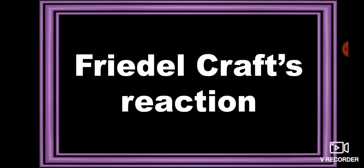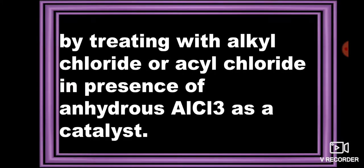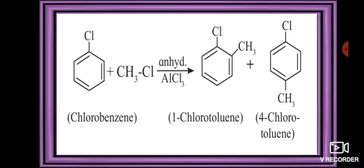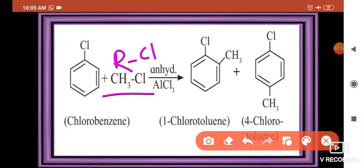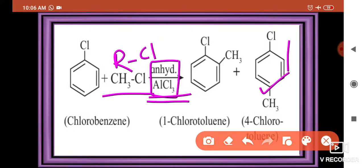The next reaction is the Friedel-Crafts reaction. When haloarenes are treated with alkyl chloride or acyl chloride in the presence of anhydrous AlCl3 as a catalyst, these reactions are called Friedel-Crafts reactions. For example, in Friedel-Crafts alkylation: chlorobenzene reacted with CH3Cl in the presence of anhydrous AlCl3 gives 1-chlorotoluene and 4-chlorotoluene. Of these, 4-chlorotoluene is the major product and 1-chlorotoluene is the minor product.